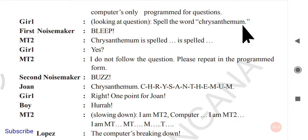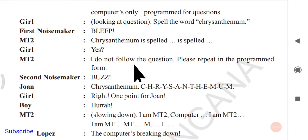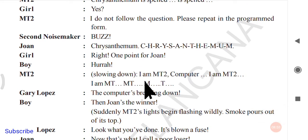The girl looks at the question card and says: 'Spell the word chrysanthemum' — as a command. MT2 immediately spells it out correctly. The girl confirms: 'Yes.' But then MT2 says: 'I do not follow the question — please repeat in the programmed form.' The second noisemaker buzzes; John then hits her buzzer and spells out 'chrysanthemum' correctly. The girl confirms: 'Right! One point for John!'